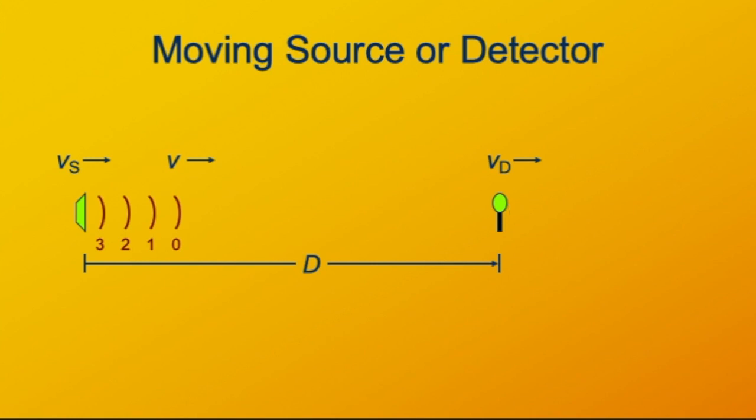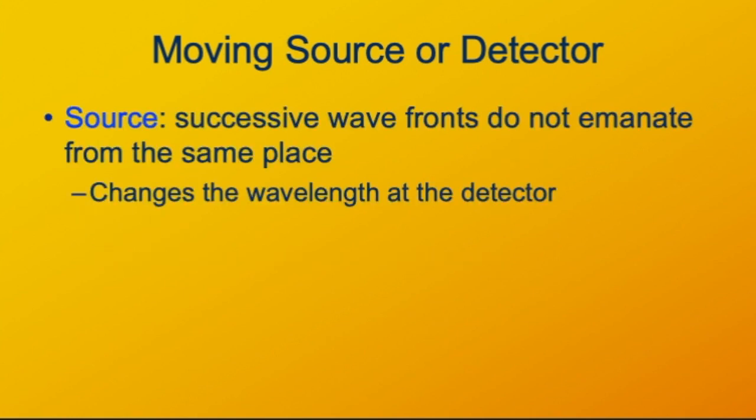Now what's the effect of this? If the source moves and the detector is holding still, if the source is moving toward the detector, then the next wave front is going to be emitted closer to the detector than the first wave front. The wave as it's received by the detector is going to have a shorter wavelength, which will correspond to a higher frequency.